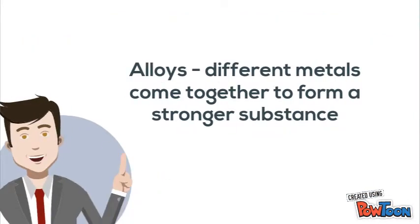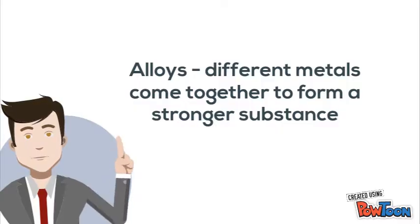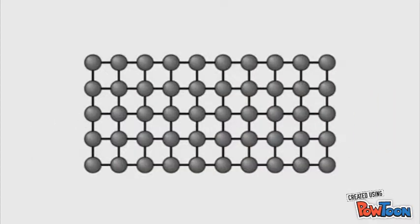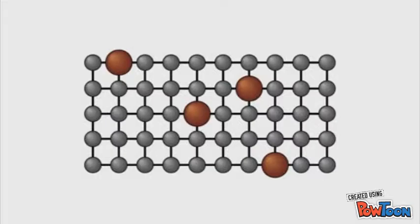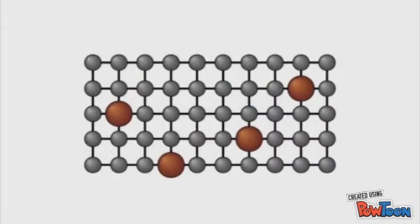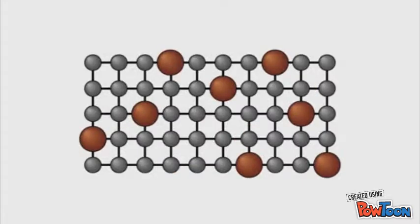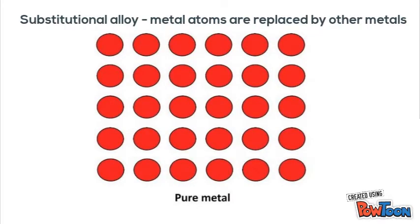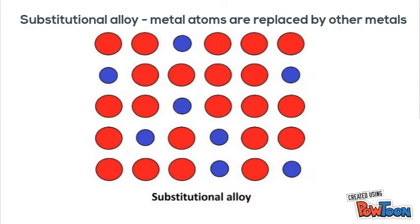Alloys are when different metals come together to form a stronger metallic substance. Here you have a gray metal and a copper metal, and the copper fills in some of the holes at random with no fixed formation. There are two types of alloys. The first is called a substitutional alloy, where metal atoms are replaced by other atoms — you can see the red ones with some replaced by blue metal atoms.